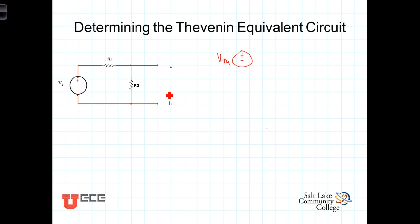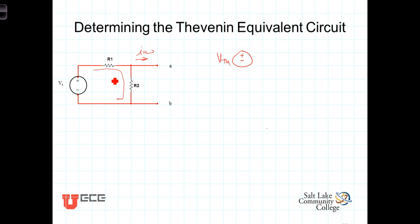We can use any method we want to determine the voltage across R2. Because this is open circuit, there is no current going through that branch, which means R1 and R2 are in series. We could calculate the current through those two resistors and multiply by R2, or we can use the voltage divider formula. V open circuit equals V_S times R2 over R1 plus R2. For this circuit, that is our V Thevenin.